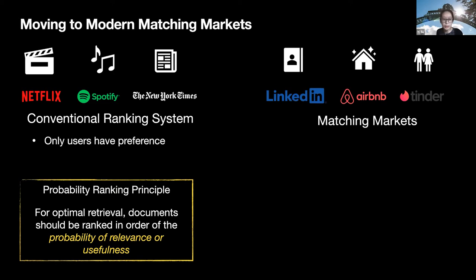Nowadays, ranking systems are not only used in conventional recommendation settings, but also widely in a new kind of online platforms which we call matching markets. This includes job search, college admission, housing allocation, and dating or social recommendations.